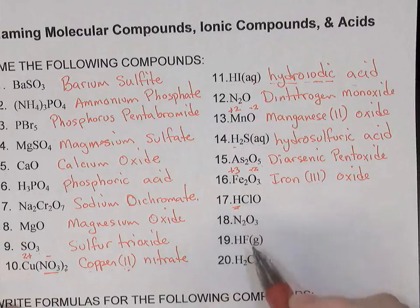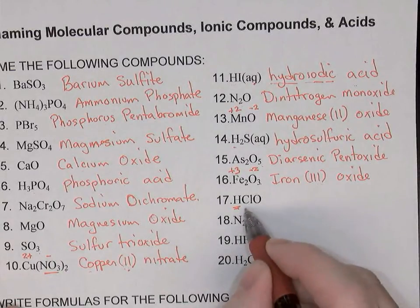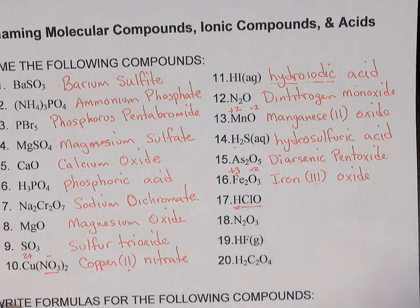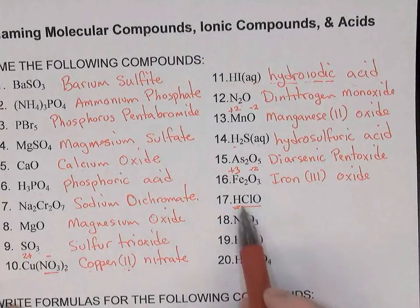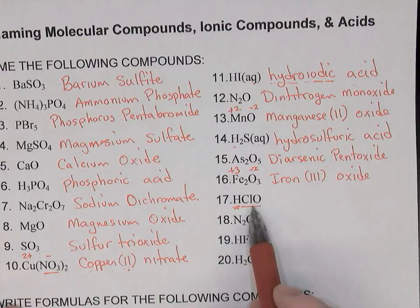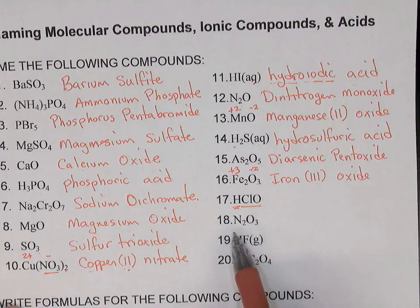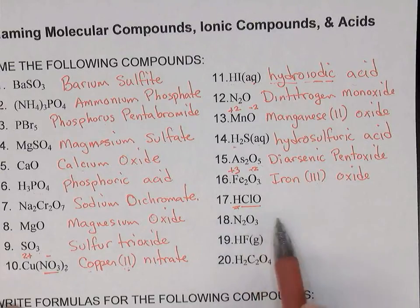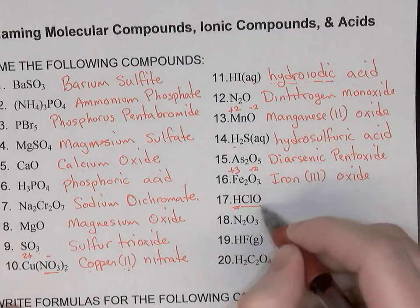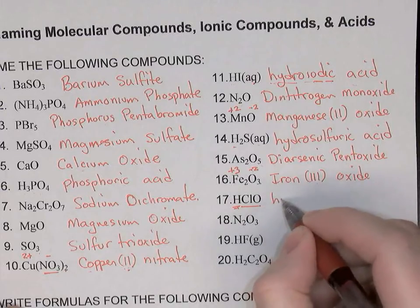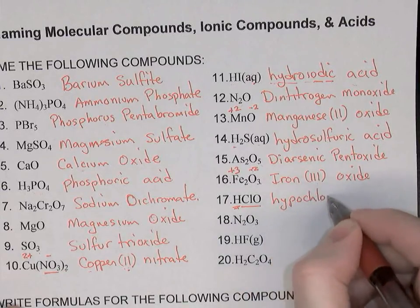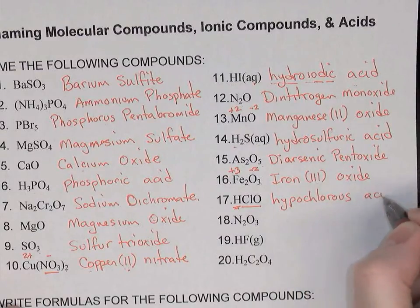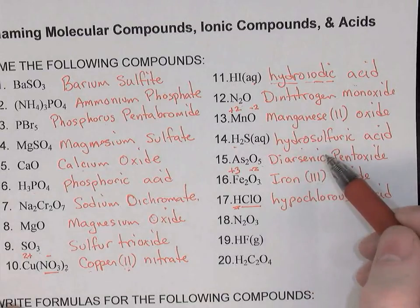Next we have another acid — hydrogen bonded to a complex ion, making it an oxyacid not a binary acid. The complex ion here is ClO, which is hypochlorite. Since hypochlorite ends in -ite, the suffix for this acid will be -ous. So hypochlorite becomes hypochlorous acid. Remember that hydro is only used for binary acids.